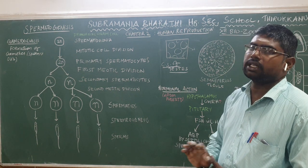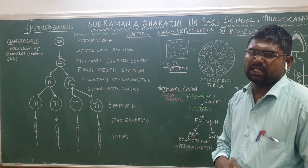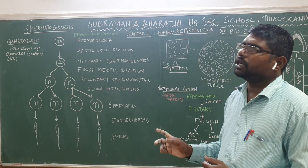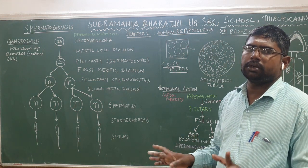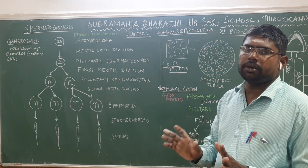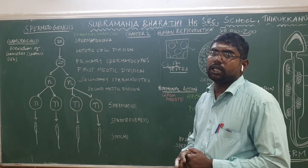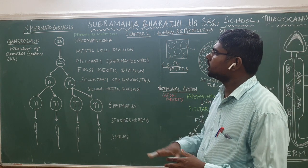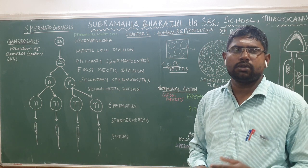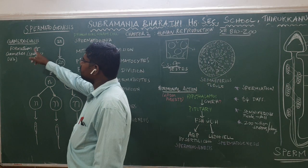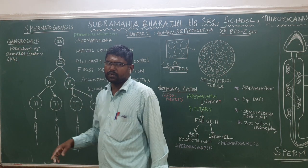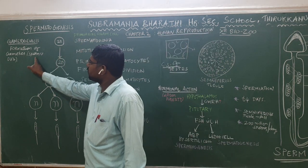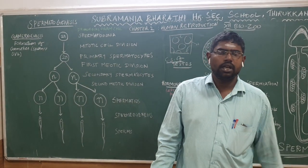As for the first event, we can see gametogenesis in the reproductive process. The primary function of the male reproductive system and female reproductive system is gamete formation. Gametes are produced by both — all people have gametes.